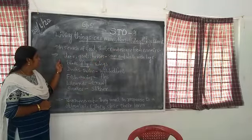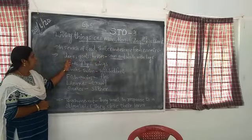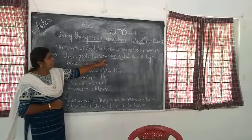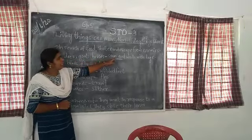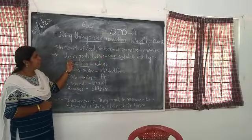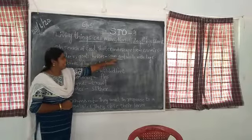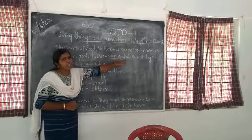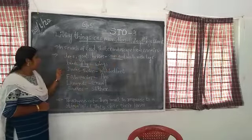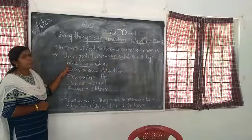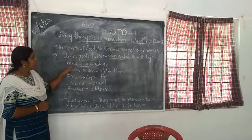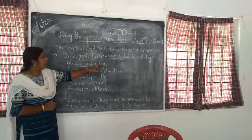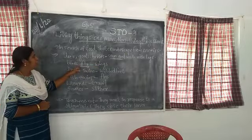We know that deer, goat, and horses run and move with their legs. These animals run and walk with their legs. Birds can also fly. Birds can fly with their wings. Wings help the birds to fly.